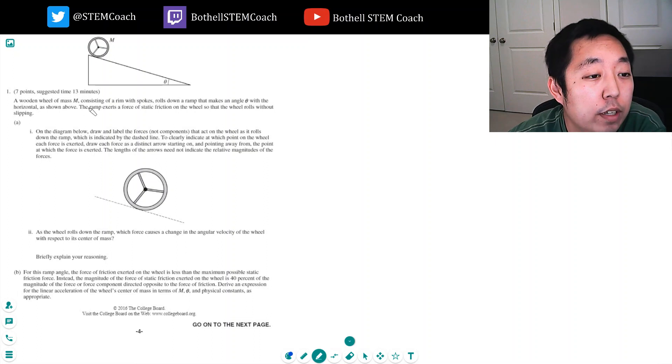Alright, so a wooden wheel of mass M consists of a rim with spokes, rolls down a ramp that makes an angle theta with the horizontal shown above. The ramp exerts a force of static friction on the wheel so that the wheel rolls without slipping.